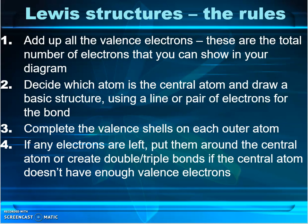I'll show you that in just a moment. You then have to figure out which atom is the central atom in your molecule, and it's usually pretty easy. For example, in H₂O with two hydrogens and one oxygen, it's going to be the oxygen sitting in the middle. If you've got one phosphorus and three chlorines, it's going to be the phosphorus in the middle. If you're not sure, it's going to be the atom with the smallest number of valence electrons and therefore needing the greatest number of bonds.